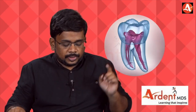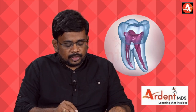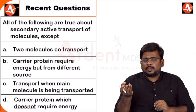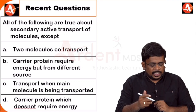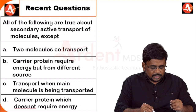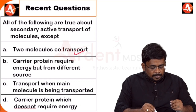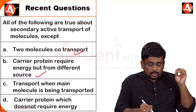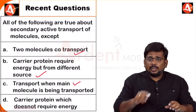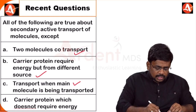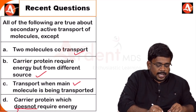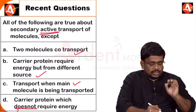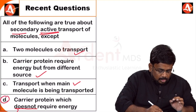Coming to the question about secondary active transport: two-molecule co-transport like sodium-glucose is correct; carrier protein requiring energy is correct; transport when the main molecule is being transported is correct. But the fourth option states the carrier protein does not require energy — that is wrong, because active transport always needs energy. So that is the wrong option.